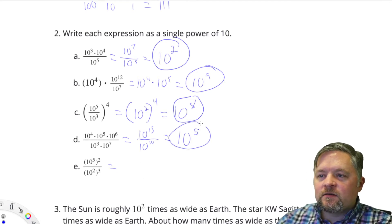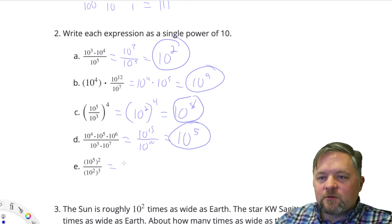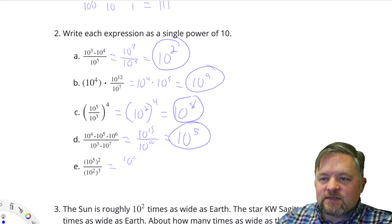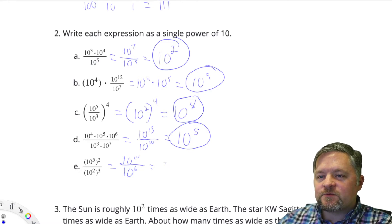Next one. 10 to the 5 squared. Multiply the exponents. 2 times 5 is 10, so it's 10 to the 10 on top. And 2 times 3 is 6, 10 to the 6 on the bottom. 10 to the 10 divided by 10 to the 6 means we can subtract the exponents. 10 subtract 6 is 4.